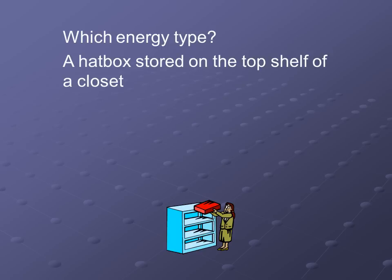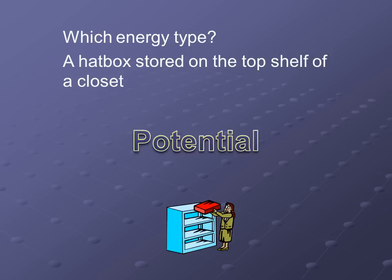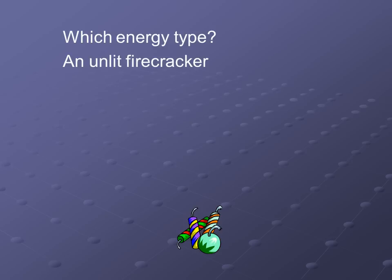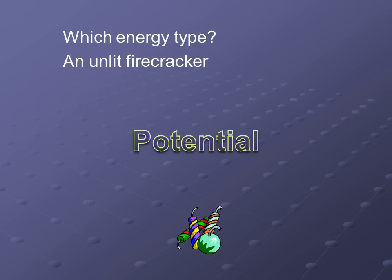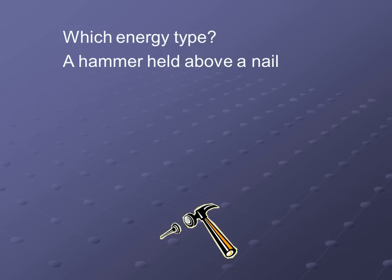Our next one: a hat box that is stored on the top shelf of a closet. This has to be potential — the big giveaway is that it's stored. The box isn't moving, it's just hanging out on top of the shelf, but it is pretty high up, so it has good potential. Next: an unlit firecracker. This has to be potential energy — it's chemical energy, it's stored up, it hasn't been used yet. Next: a hammer held above a nail. The hammer is not moving yet, so the energy is stored up, therefore it must be potential energy.